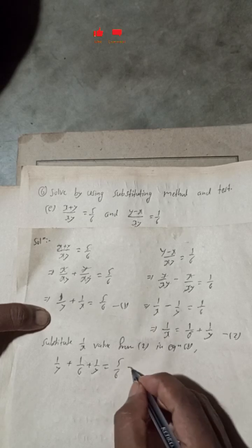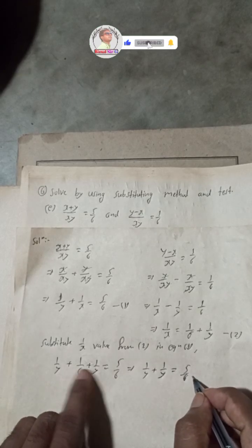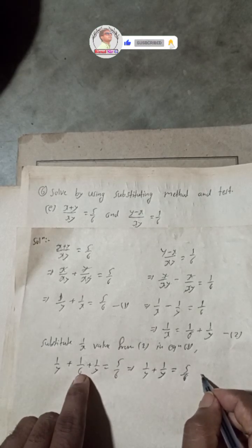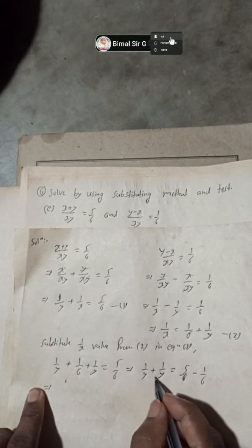Substituting 1/x from equation 2 into equation 1: 1/y + 1/x = 5/6 becomes 1/y + (1/6 + 1/y) = 5/6. Rearranging, we get 1/y + 1/y = 5/6 - 1/6.